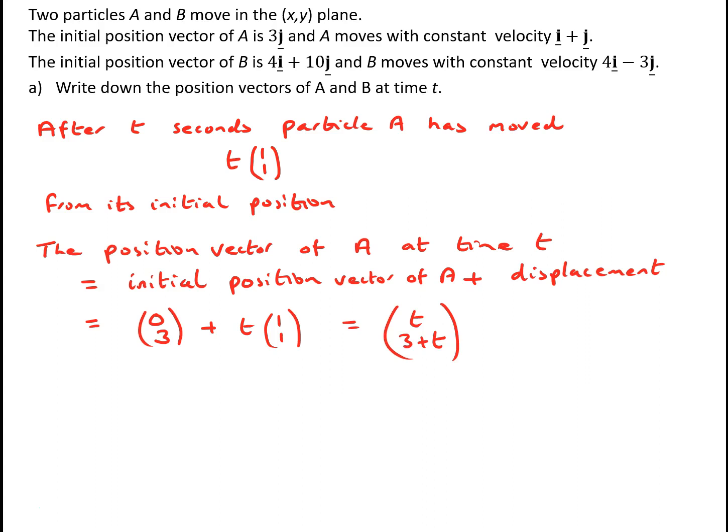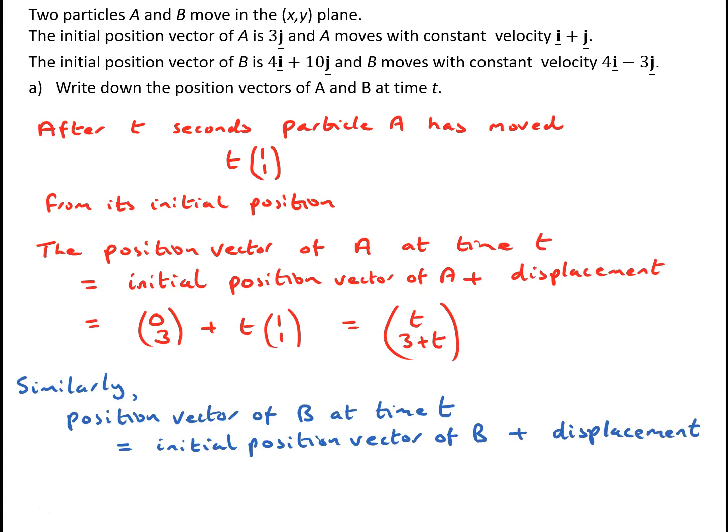An entirely similar argument tells us that the position vector of B at time t is the initial position vector of B, which is the vector (4, 10), plus the displacement during time t, which is t times the velocity vector (4, −3). So the position vector of B at time t is (4, 10) plus t times (4, −3), which simplifies to the single vector (4 + 4t, 10 − 3t).